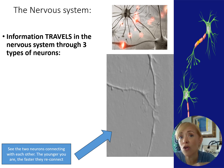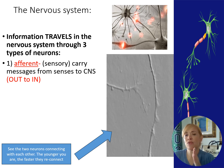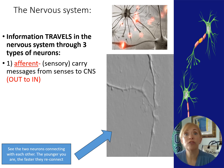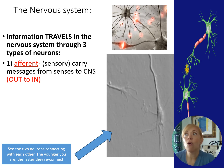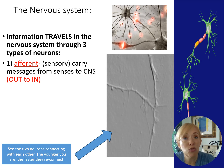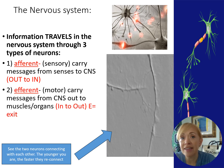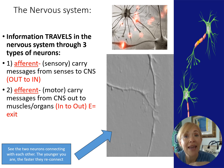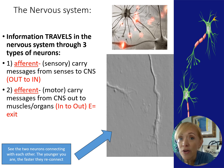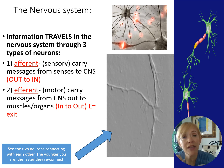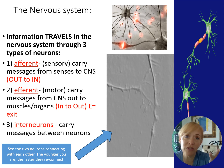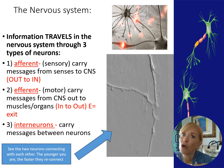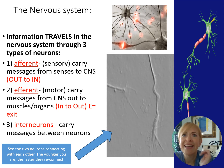Efferent neurons, with an 'E,' exit — they go from the central nervous system outward, allowing you to move your arm or kick your leg voluntarily. Know all three kinds: afferent, efferent, and interneurons. Also know the two ways neurons communicate: electrically through electrical impulses, and chemically through chemical messengers called neurotransmitters.